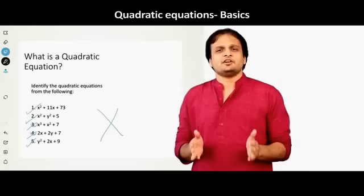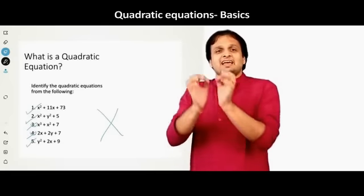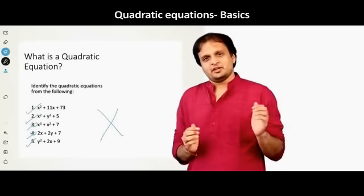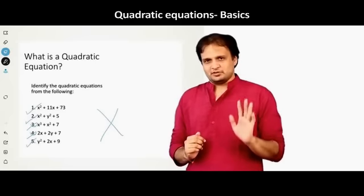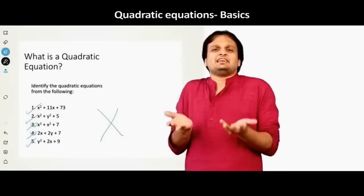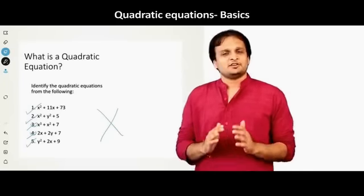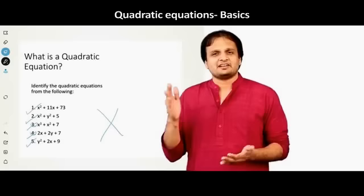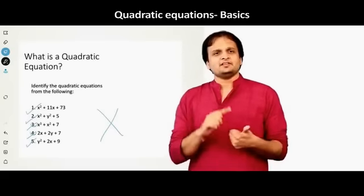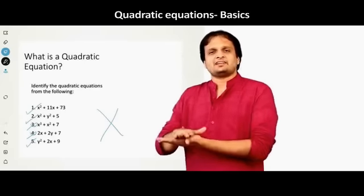Why? Because the question was not find out which of these are quadratic. What was the question? Identify the quadratic equations from the following. So there are two words, quadratic and equation. Quadratic means the power should be 2, highest power should be 2. On the other hand, equation means that there has to be an equal sign. Do you see an equal sign in any of these expressions? No. Then none of these are quadratic equations. What are these then? These are called expressions. So 1, 2 and 5 are quadratic expressions. They are not quadratic equations.